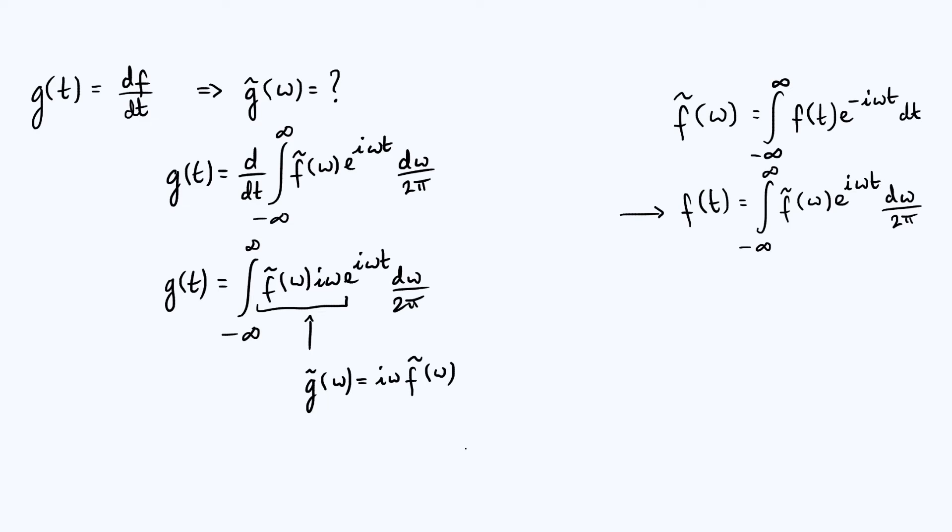So the key result is that differentiation in real space corresponds to multiplication by i omega in Fourier space.